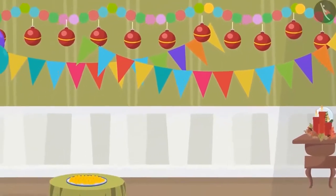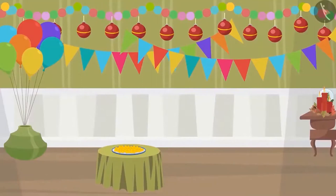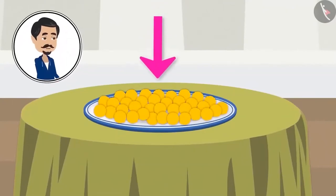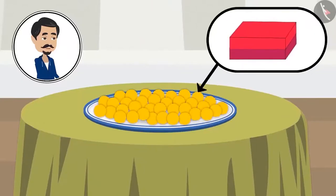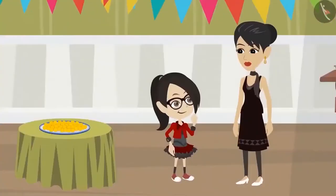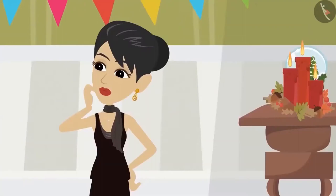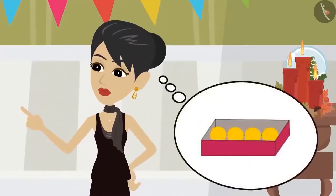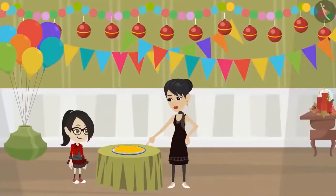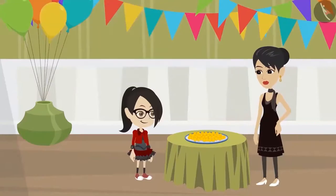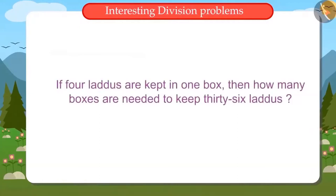Today there is a party at Vandana's house and some guests are going to come. Ladoos are to be given to the guests on the way back. Papa brought the Ladoos from the market but forgot to bring the boxes. Mommy asks Vandana to bring boxes from the market. Vandana asks: Mommy, how many boxes should I get? Mommy only knows that four Ladoos are to be kept in one box. She asks Vandana to count the Ladoos and bring enough boxes so all the Ladoos can be kept with four Ladoos per box. Now Vandana has to find out how many boxes are needed to keep thirty-six Ladoos if four Ladoos fit in one box.